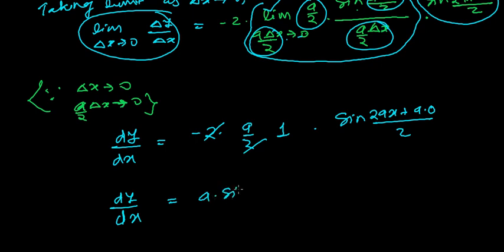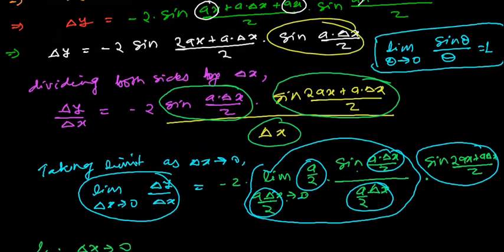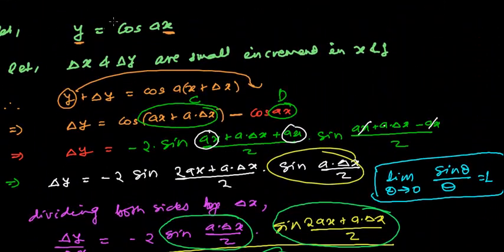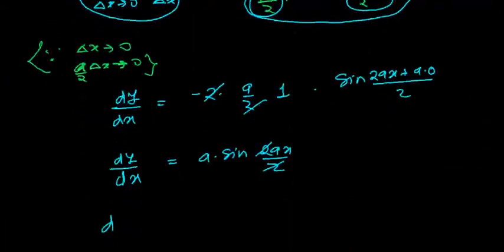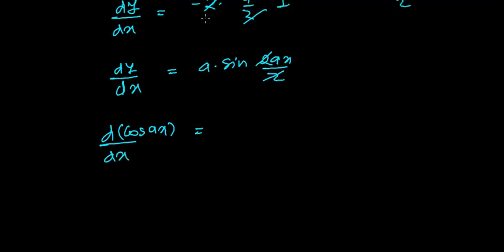We get a · sin(2ax) / 2, and again the two and two cancel. So finally, the derivative of y — and our y is cosine of ax — so the derivative of cosine(ax) with respect to x is minus a · sine(ax). And that's our solution.